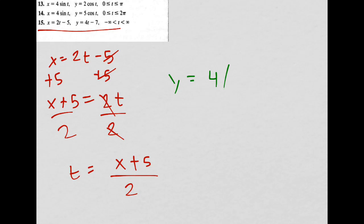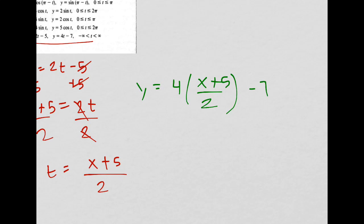So instead of, I write y, I do it in green now. y equals 4 times t, which is this, over 2, minus 7.